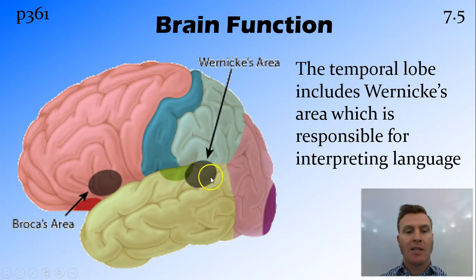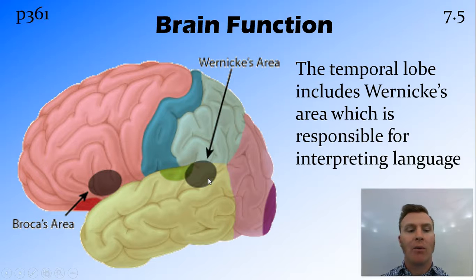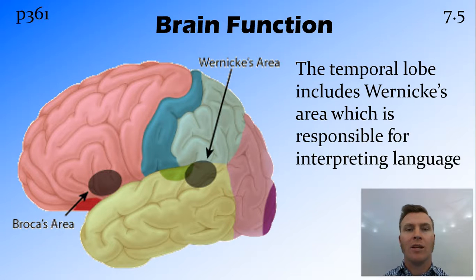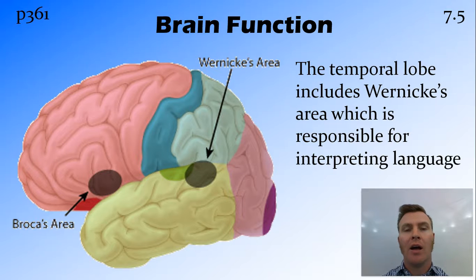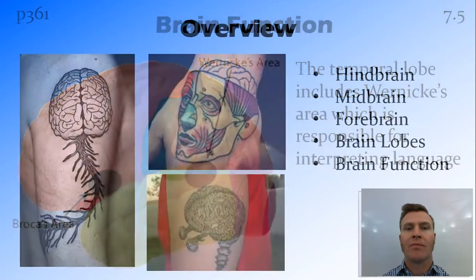Wernicke's area is around on the temporal lobe, and this is important for interpreting language. As mentioned before, the midbrain does that sort of rudimentary interpretation of sight and sound, but here in the forebrain — in Wernicke's and Broca's area — we're getting that higher-order communication happening.